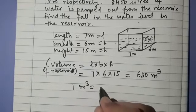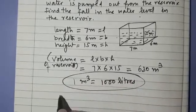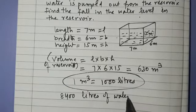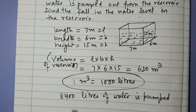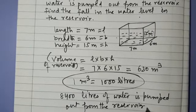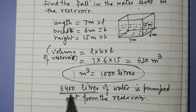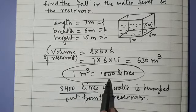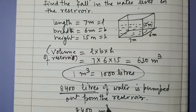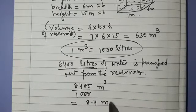Now, 1 cubic meter equals 1000 liters. It is given that 8400 liters of water is pumped out from the reservoir. So to convert it into cubic meters, we divide 8400 by 1000, which gives us 8.4 cubic meters.